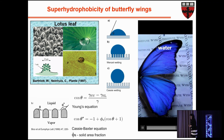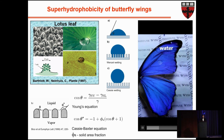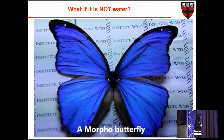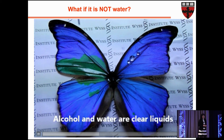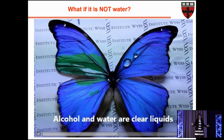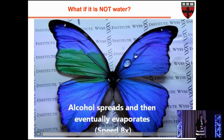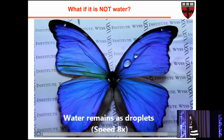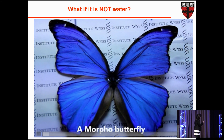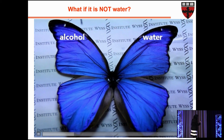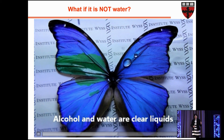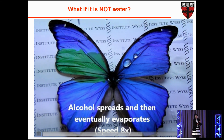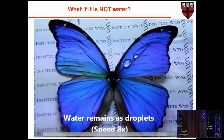Droplets of water jump off the butterfly surface and structural color remains intact. But what would happen if there were wetting? If you drop alcohol on the morpho butterfly, nature didn't need to develop a strategy to resist infiltration by alcohol. You can see that alcohol actually infiltrates the structure, and the moment it infiltrates, the color changes. In this case, the green color that appears is not structural at all — it's coming from a pigment on the other side of the butterfly wing.